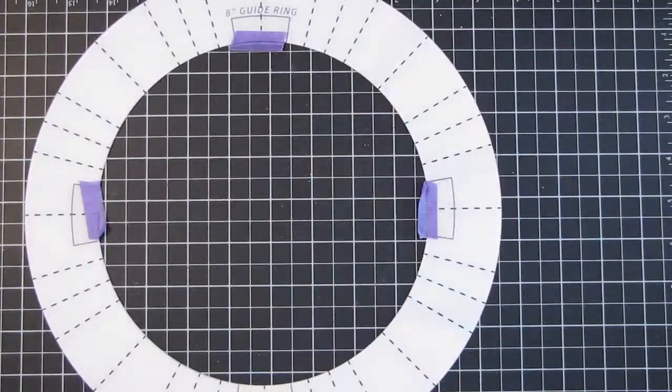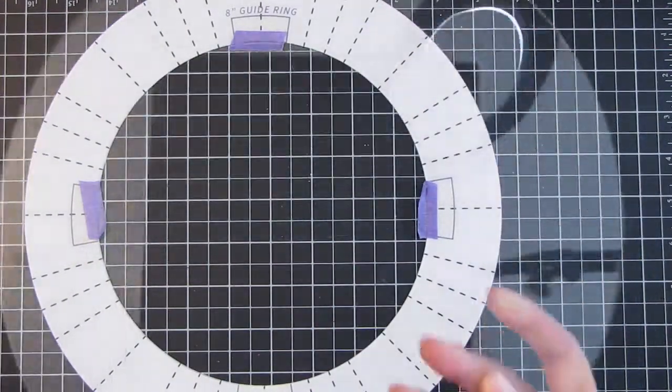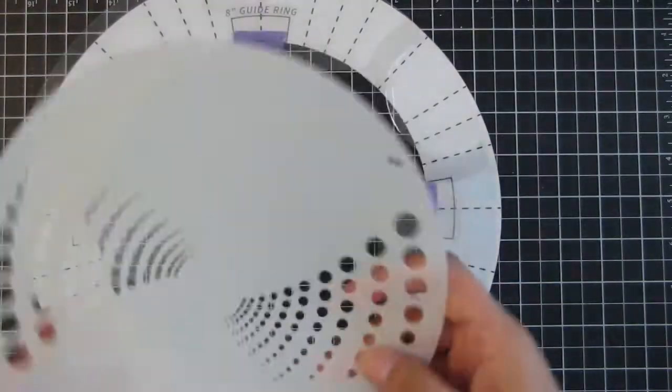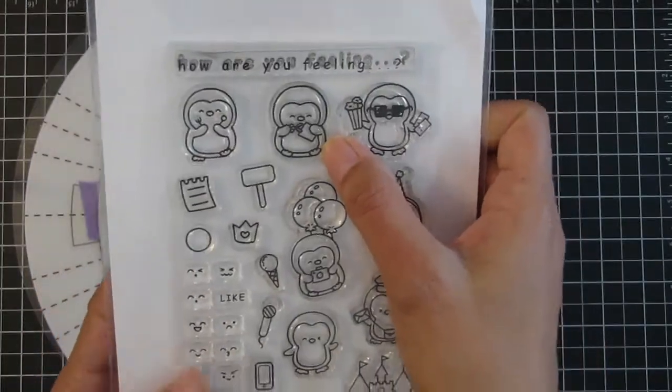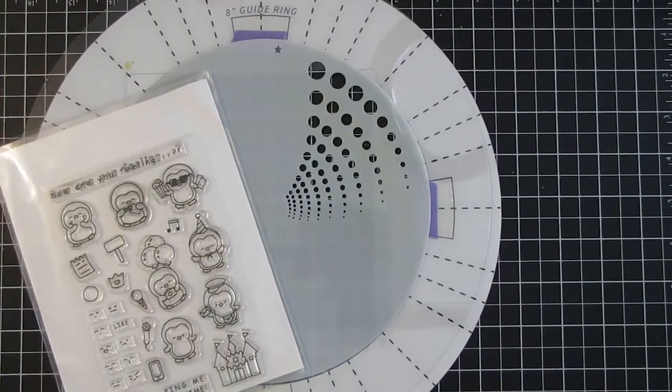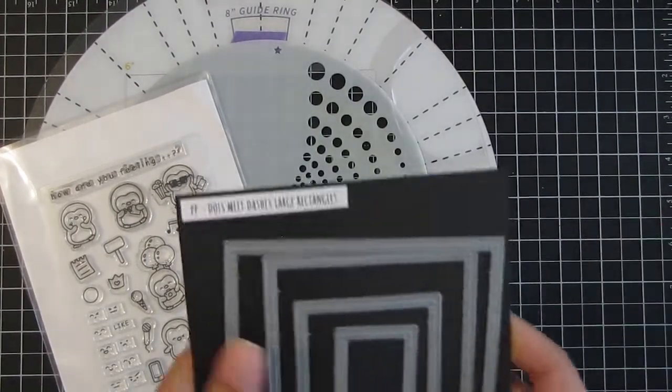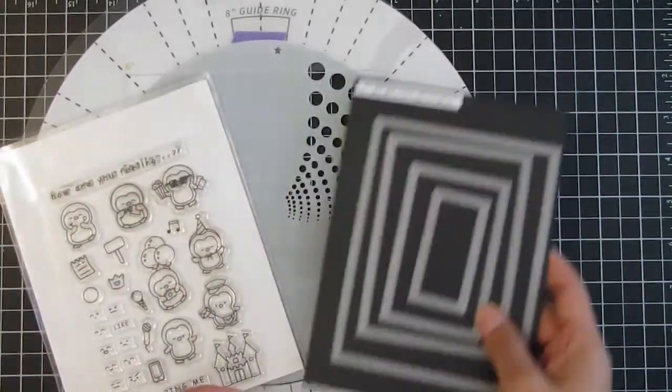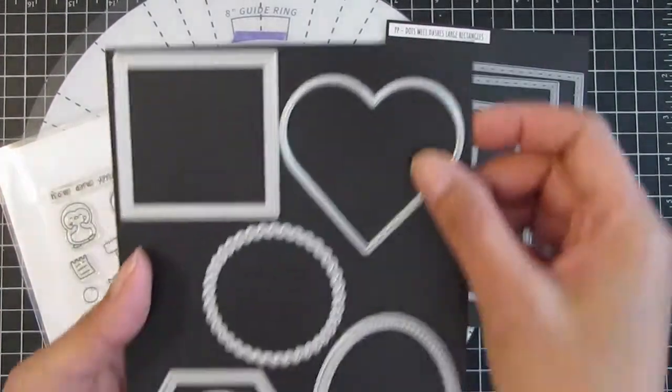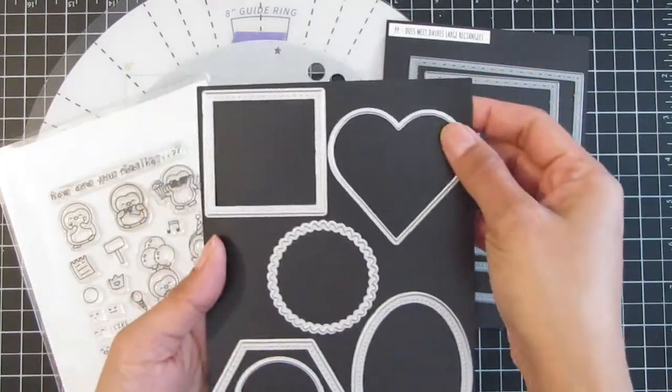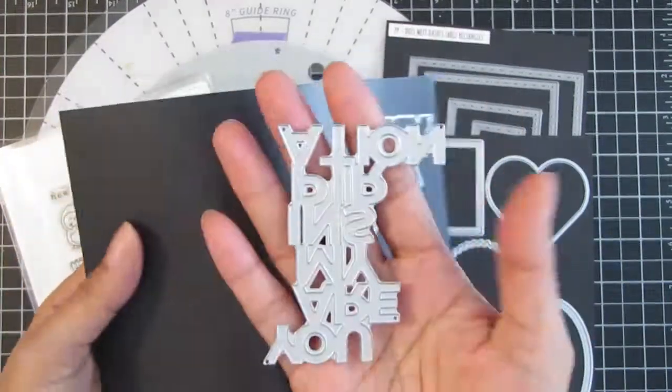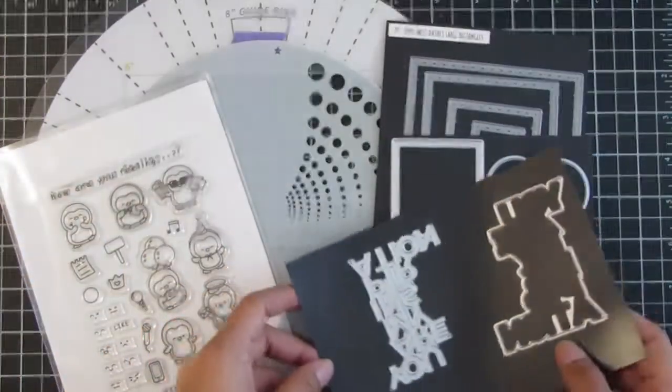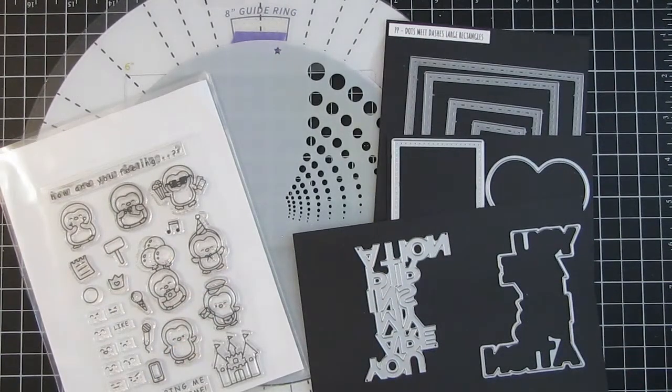Hi everyone, it's Joe, welcome back. So today's project I'll be using the 8-inch guide ring from the Stencils 360 as well as the 6-inch paper guide and then the stencil is the Waterspout stencil. The stamp set I'm using is the Penguin Agenda along with the coordinating Penguin Perfect Cuts and then the Dots Meet Dashes large rectangles die as well as the Warmest Wishes and Heartfelt Notes coordinating dies, and then lastly the newest release, You Are My Inspiration shadow dies.